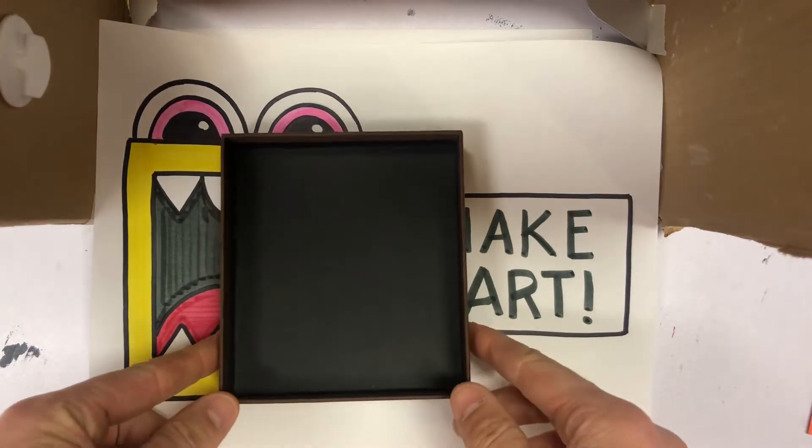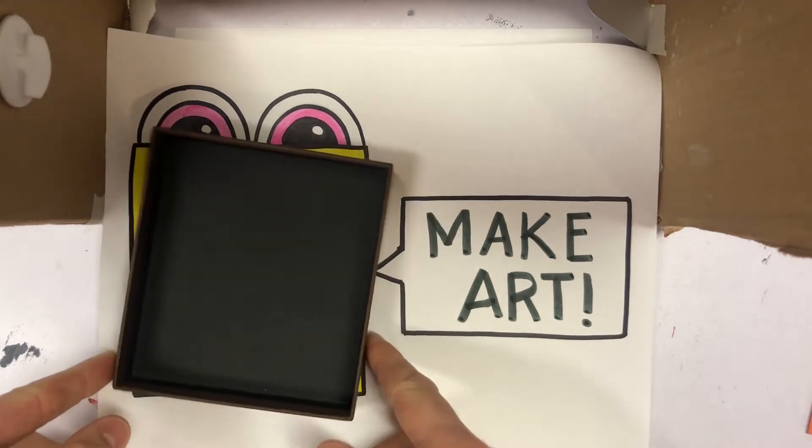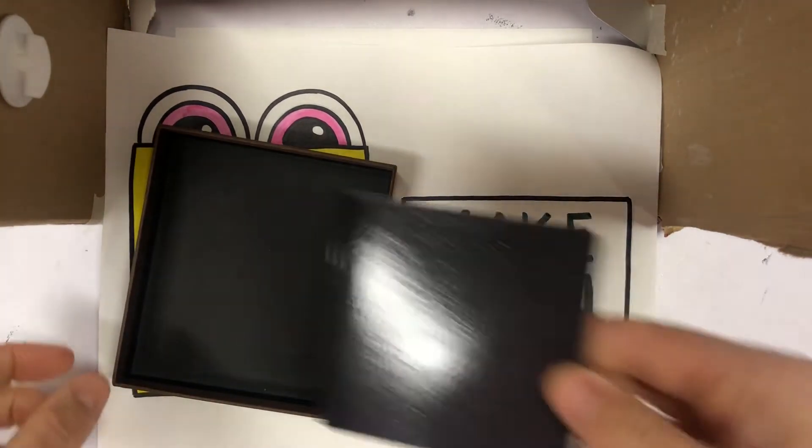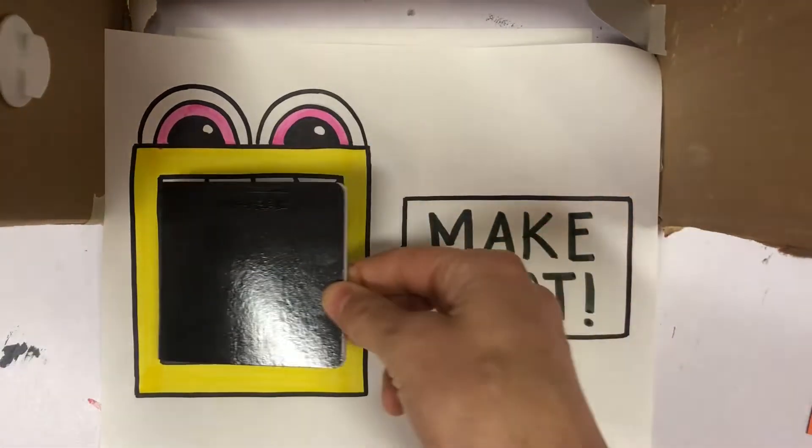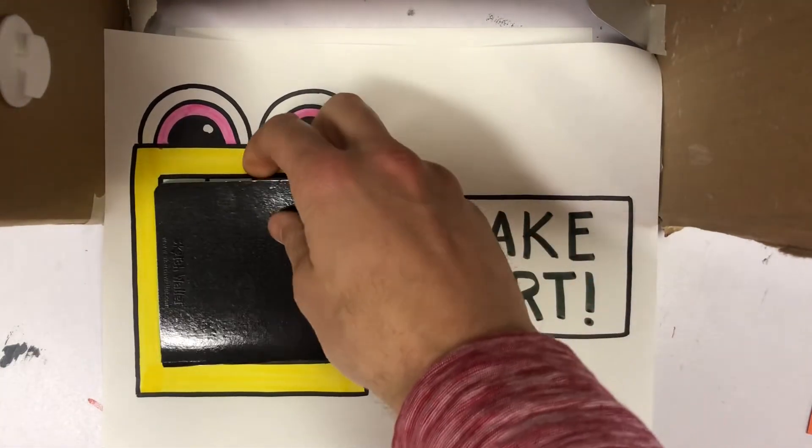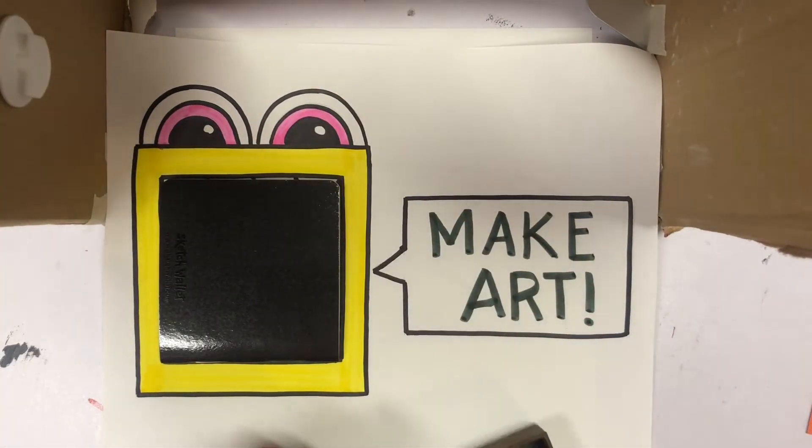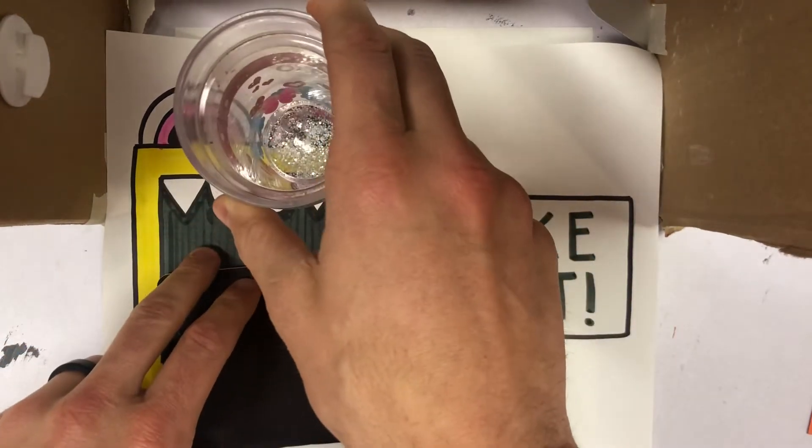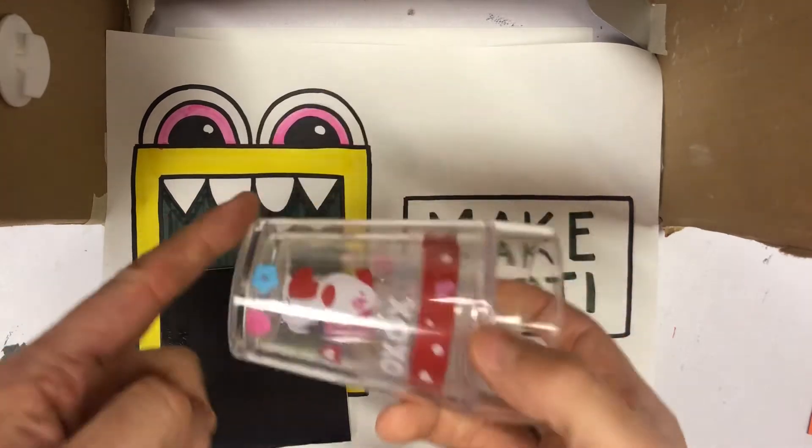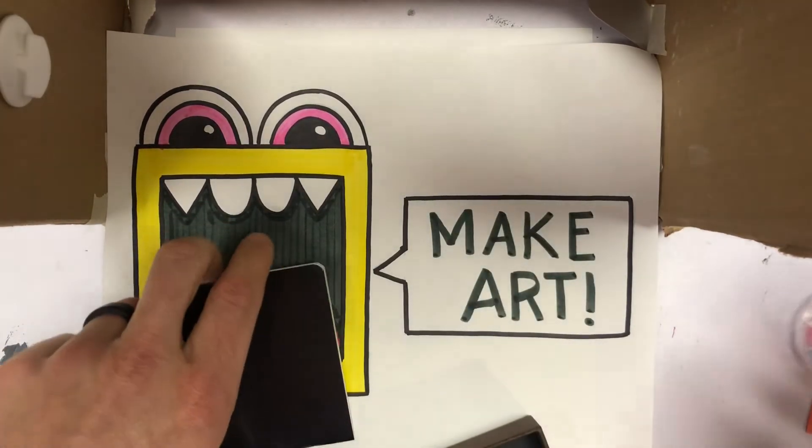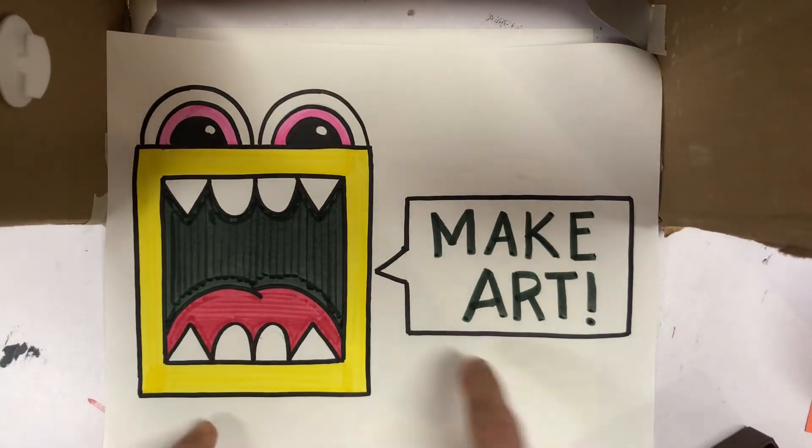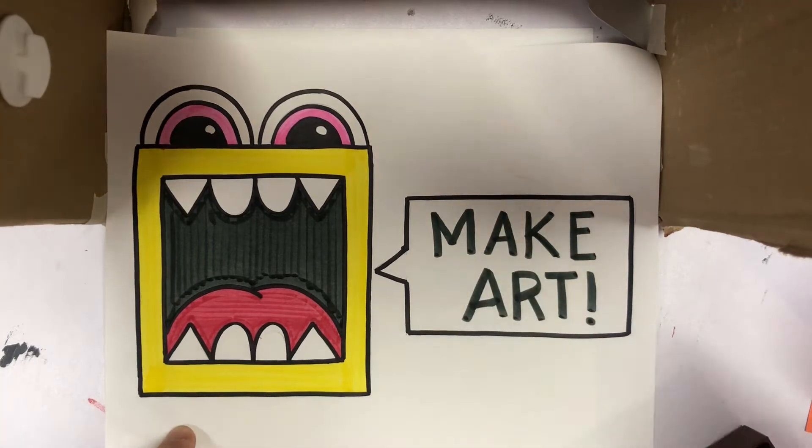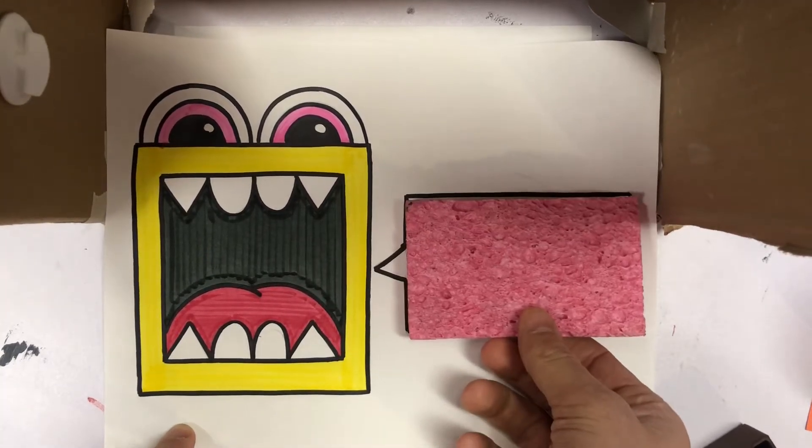You'll need one big square for the body, then a smaller square for the mouth. Then you'll want something for the eyes, so I traced this little glass here, the bottom of it, to make my eyes. I also made the speech bubble and I actually used a dried out sponge for that.